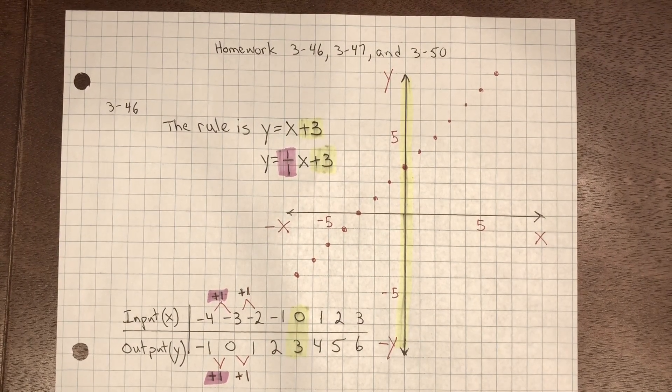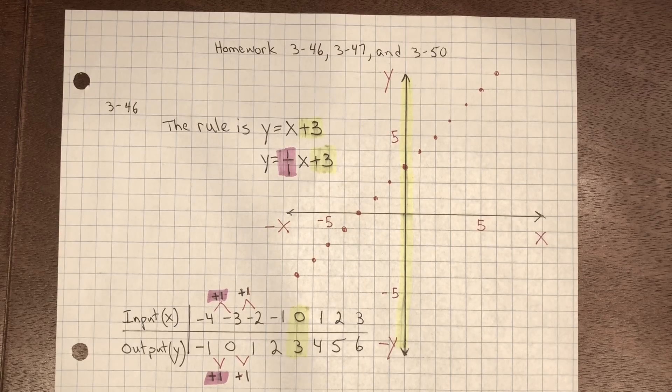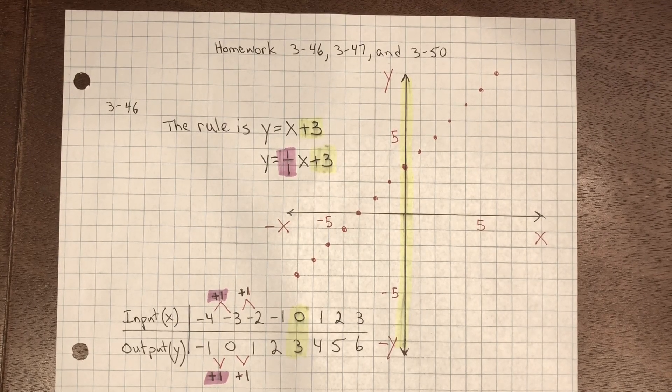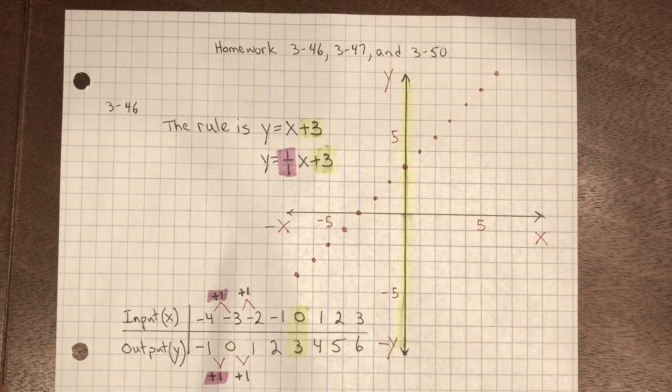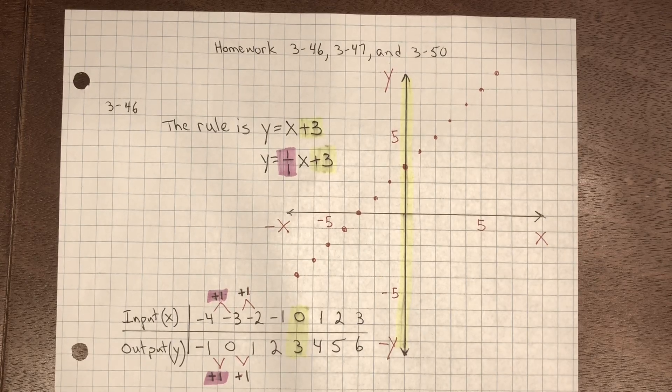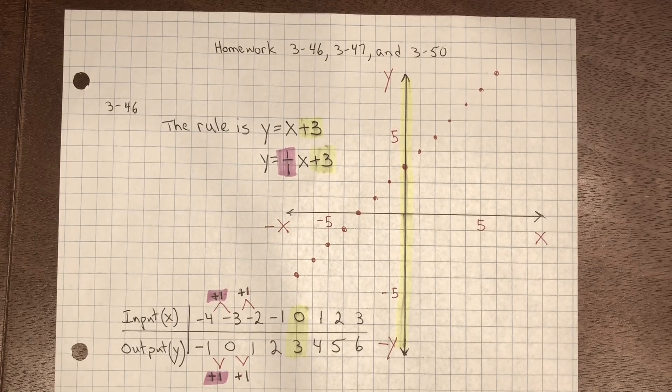In problem 346, you need to create an XY table using at least eight points from the graph at the right. So this was the given graph. You also need to write the rule for the pattern in the table.